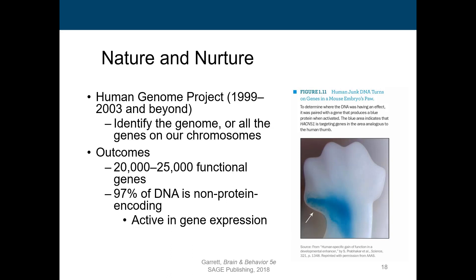Another fascinating thing is the Human Genome Project, which ran from 1999 to 2003. It identified the genome of all genes in our chromosomes. They found there are 20 to 25,000 functional genes — meaning they know what those genes do. But they also noticed that 97% of our DNA is non-protein encoding, which they call 'junk DNA.' We're still trying to understand the mysteries of our genes and DNA, and even though that project ended decades ago, there are still a lot of unsolved mysteries.